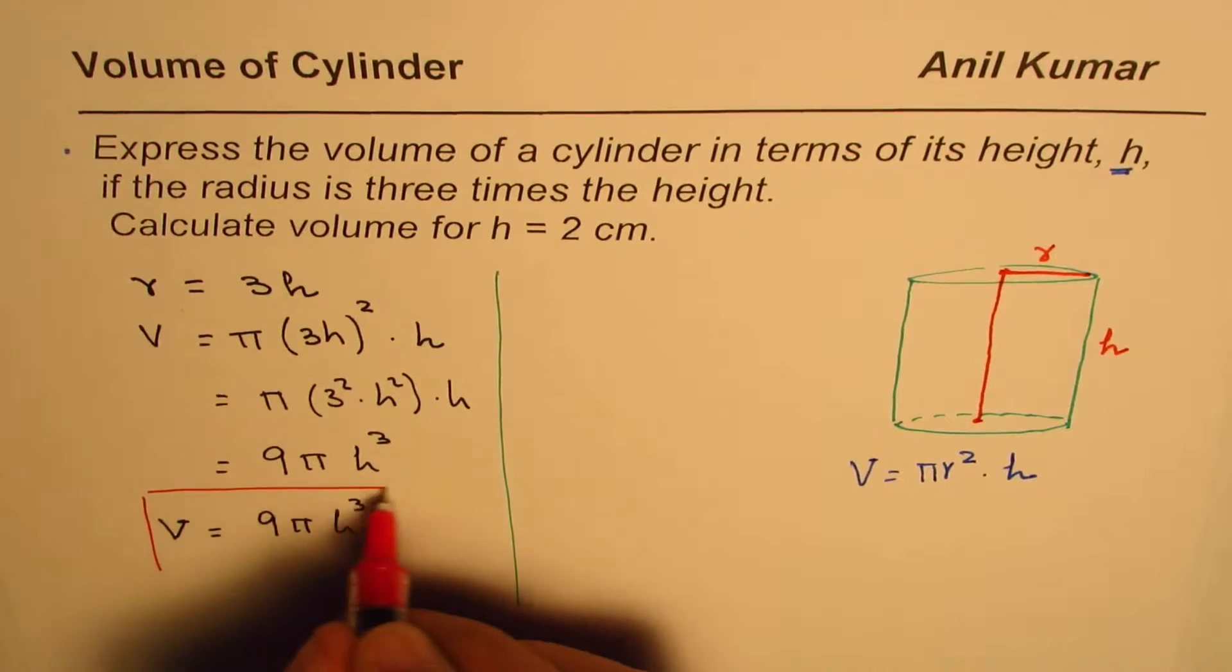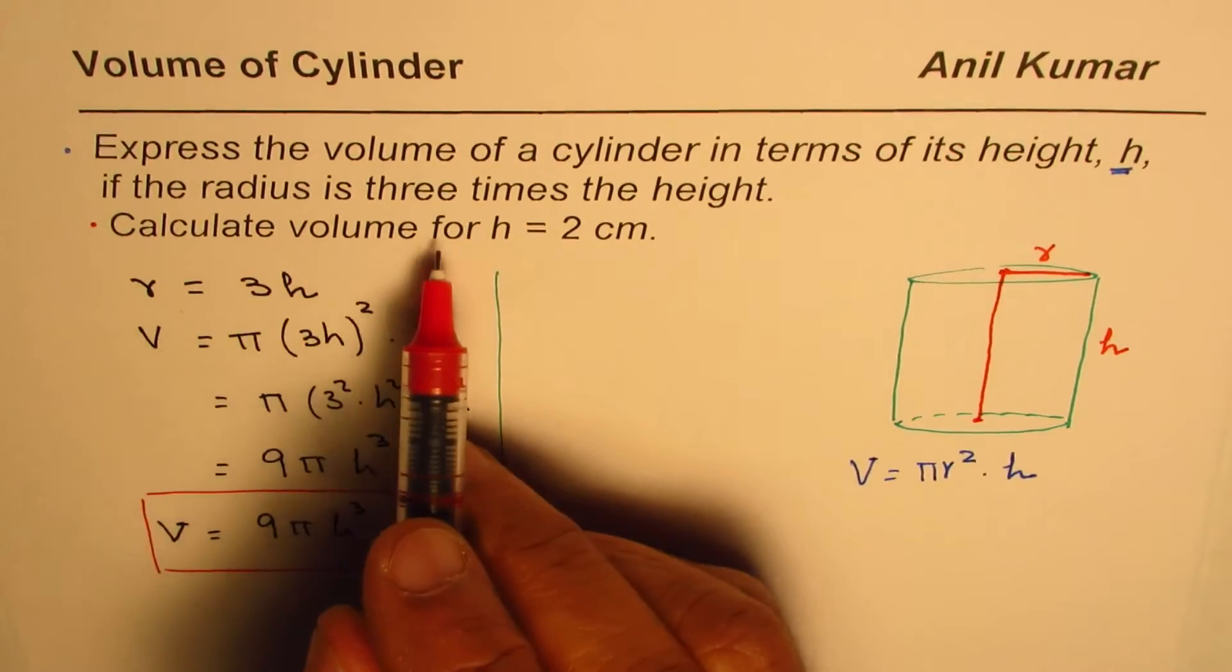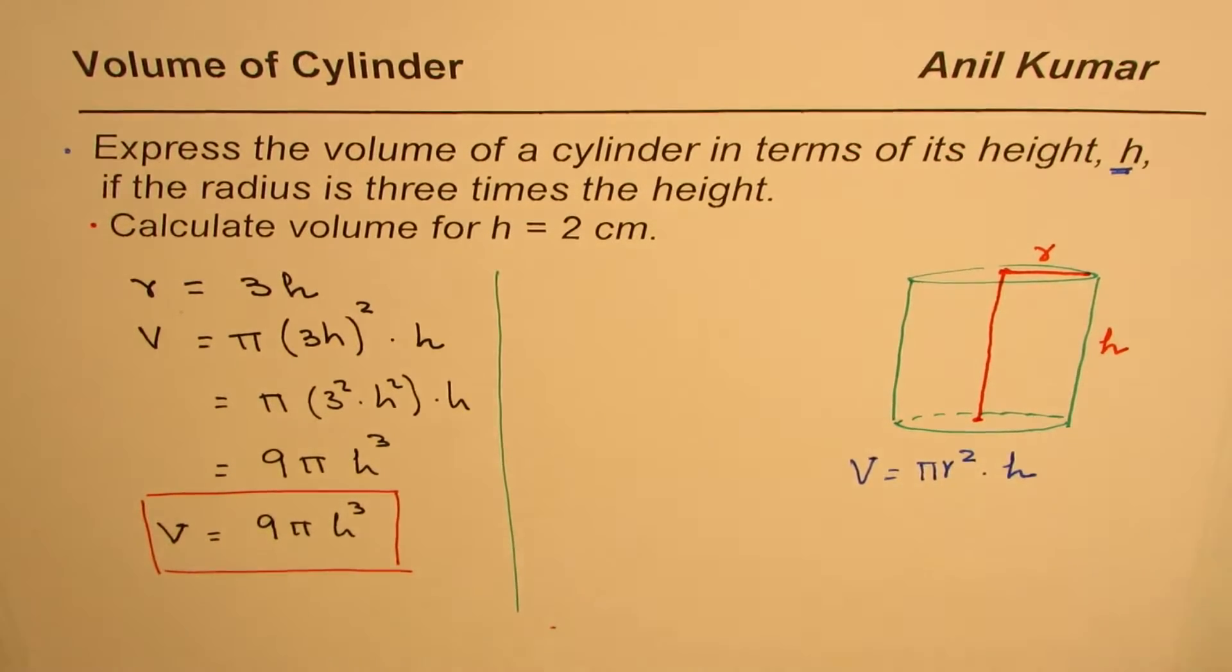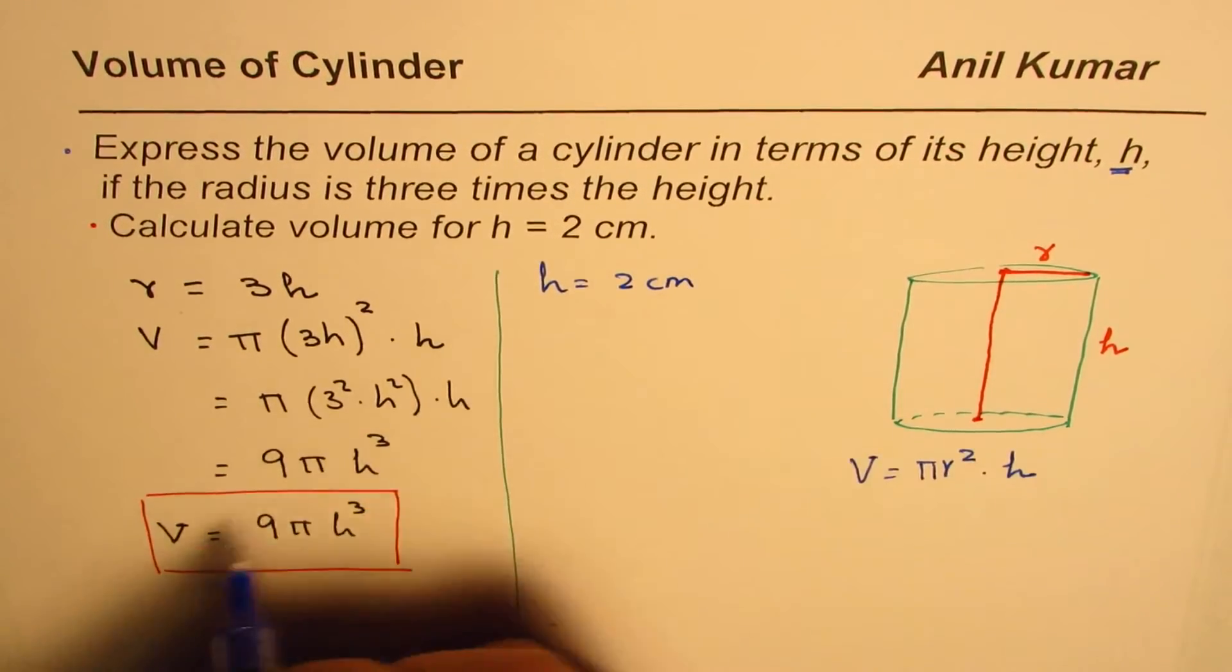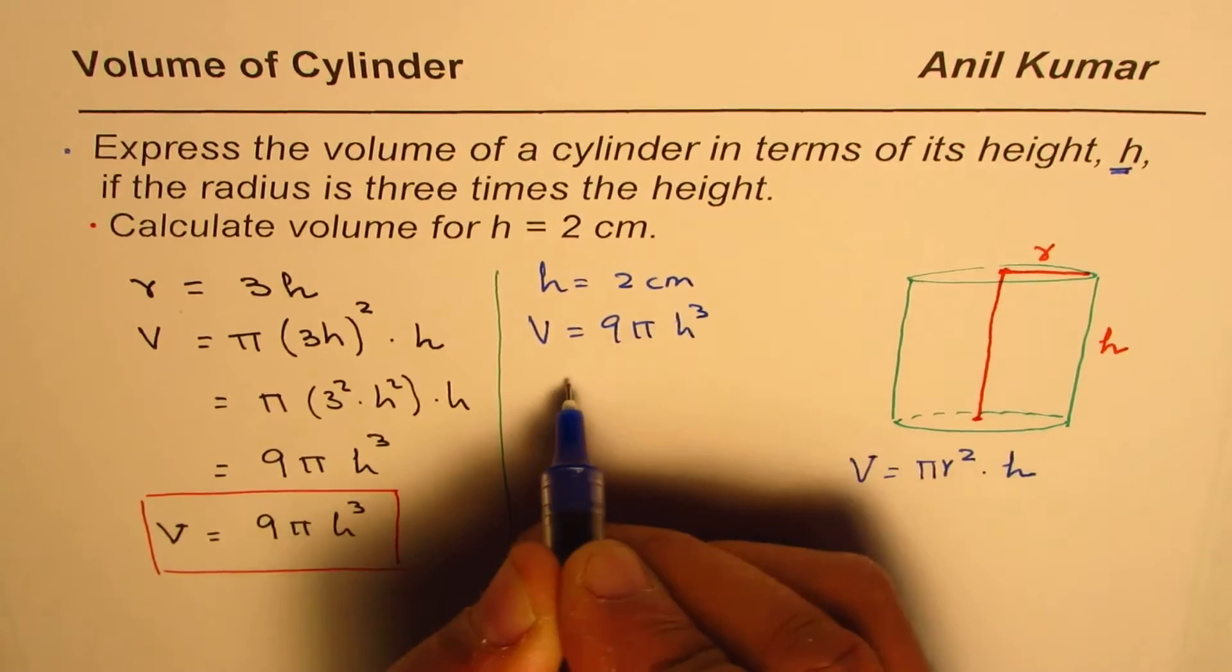Now the second part of this question is: calculate volume for height equals to 2 centimeters. So let's calculate the volume for height equals to 2 centimeters. We are given height as 2 centimeters.